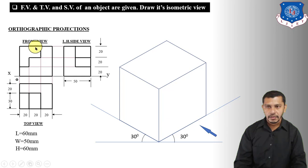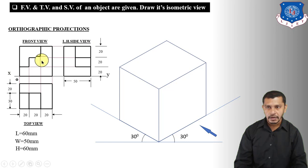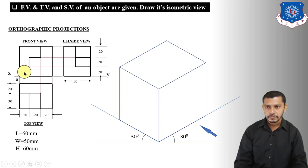Now, looking at the object, we can see it has two parts. This is the first part — with its front view, top view — and this is the second part with its own front view and top view. The left side view of the second part is also shown. We will start by drawing the first part in the front view direction.